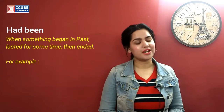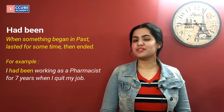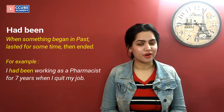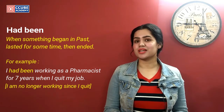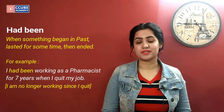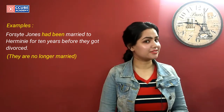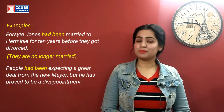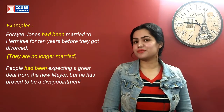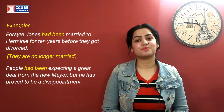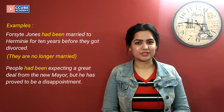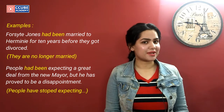For example: 'I had been working as a pharmacist for seven years when I quit my job.' In this sentence, I am no longer working as a pharmacist since I quit my job. Another example: 'Forsyte Jones had been married to Hermione for 10 years before they got divorced' — they are no longer married. Another example: 'People had been expecting a great deal from the new mayor, but he has proved to be a great disappointment' — people have stopped expecting.